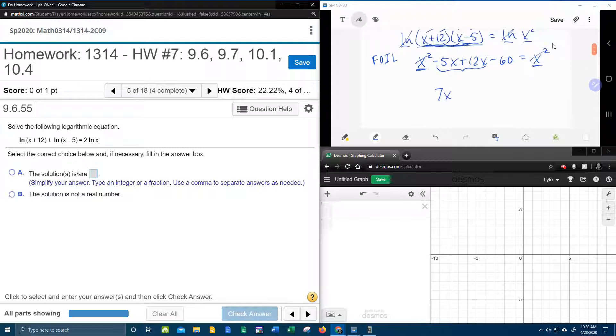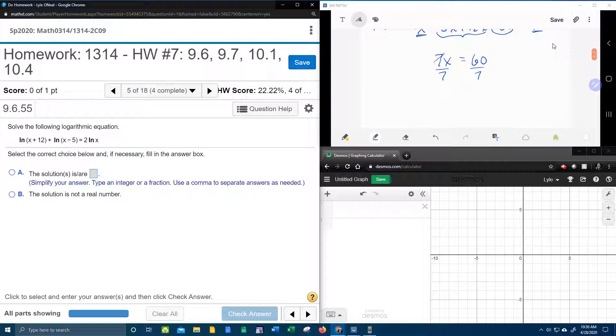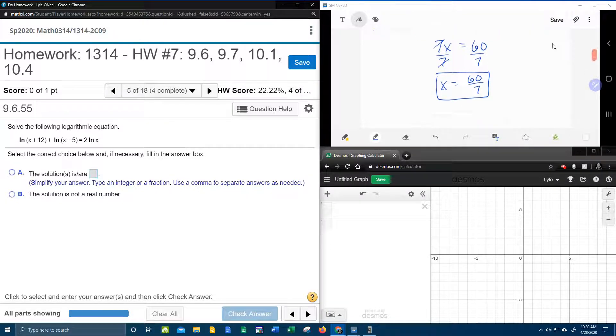The minus 60, I'm going to take that minus 60 and move it over, which will make it positive. And then I'm going to divide both sides by 7. And so my final answer, 60 over 7, 60 sevenths should be the answer.